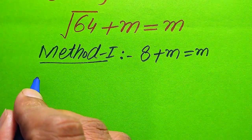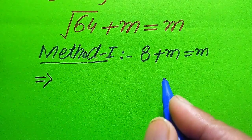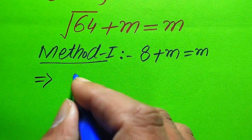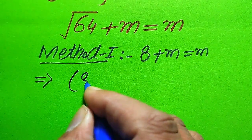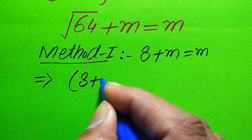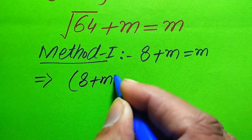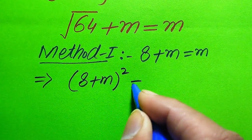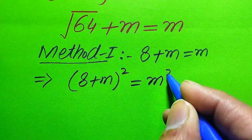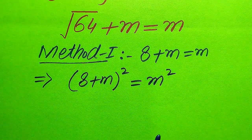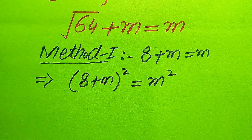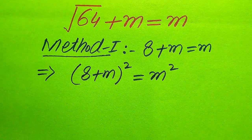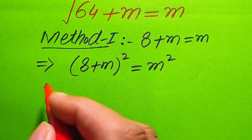Now, for the values of m, we need to square both sides of the equation. When we square both sides, it is written as: (8 + m)² equals m².